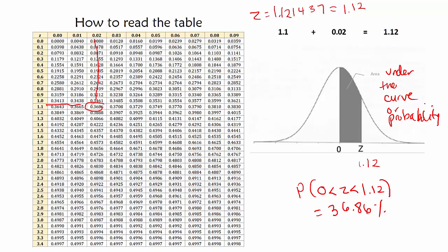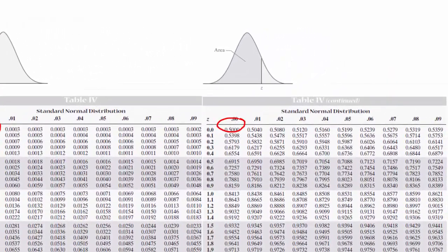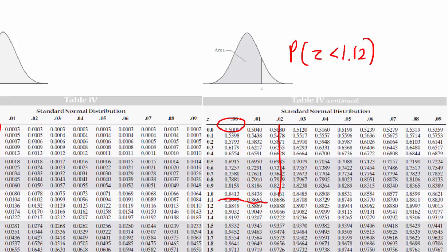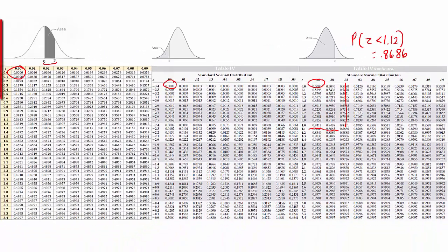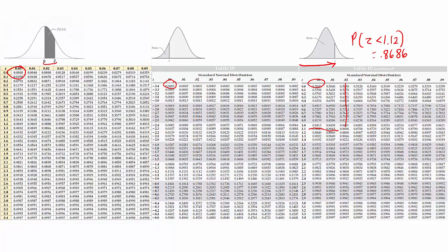If we look at one of the other tables for z, for example, if I looked at 1.12, you can see that the value is different — it's 0.8686. Because this table is giving me the probability of z less than 1.12, and that is 0.8686, which is why it's important to make sure you're using the same table when you look up probabilities as the person in the video.